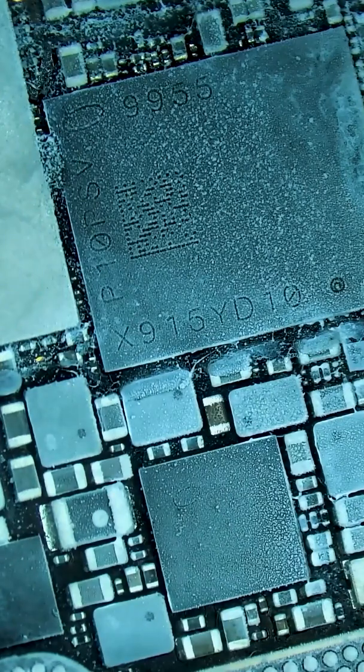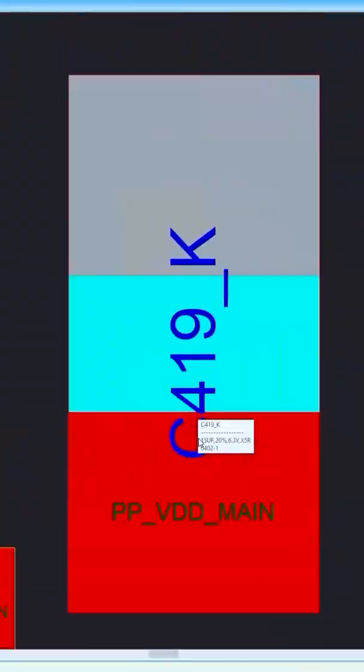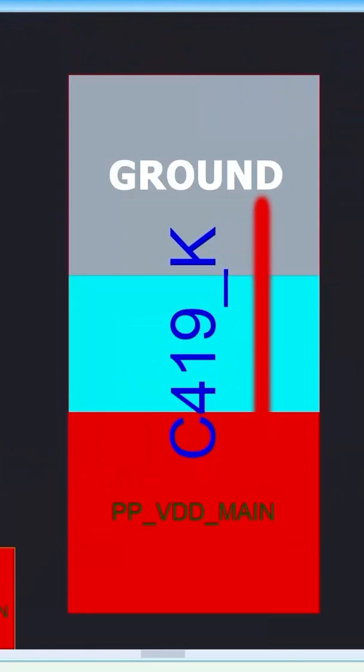The culprit reveals itself as C419-K. This capacitor has become a wire and is shorting the entire device to ground.